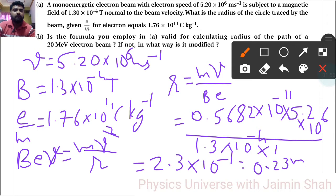Now, is the formula you employ valid for calculating the radius of the path of a 20 MeV electron beam? This energy is very large, 20 mega electron volts. If not, in what way is it modified?